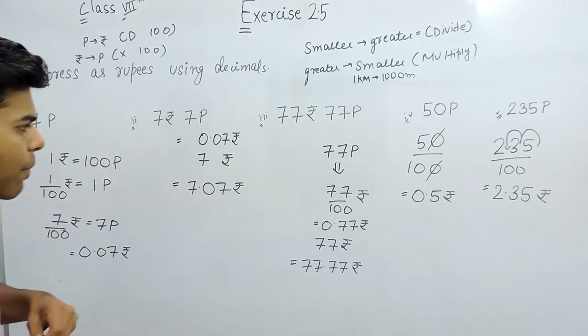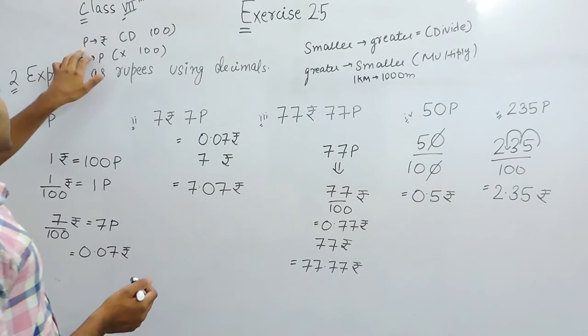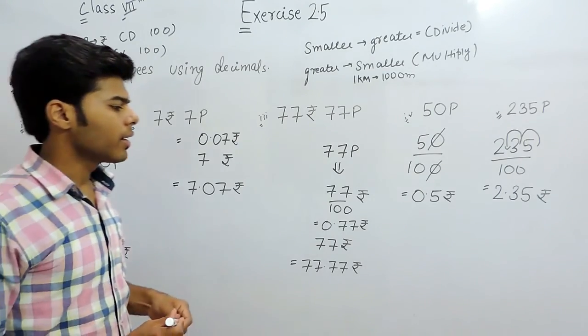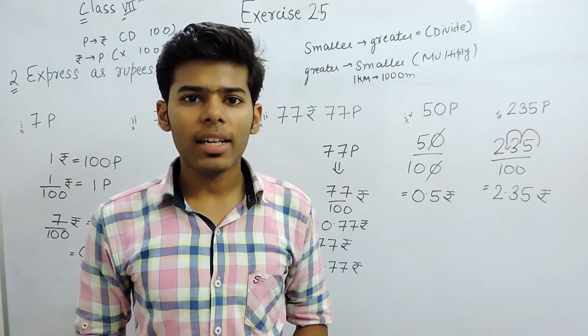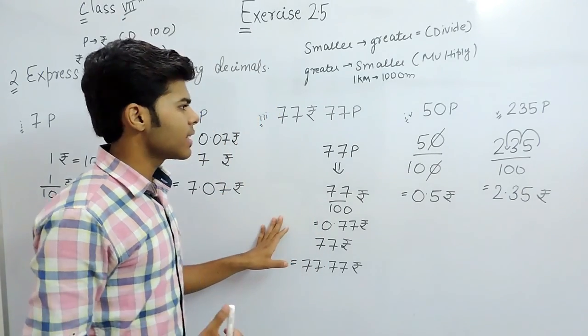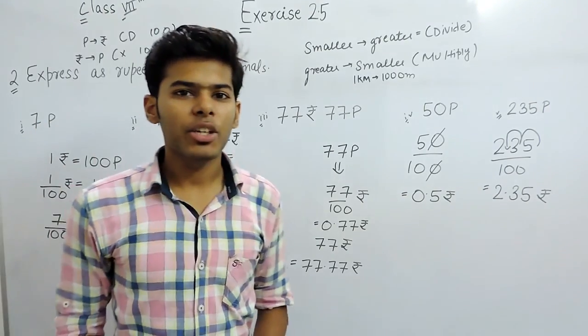This is how you can solve these types of questions by using this simplest technique. When paisa is to be converted in rupees, we will divide by 100. And when rupees is to be converted in paisa, we will multiply with 100. For any queries or doubts, you can kindly contact us on our YouTube channel, True Maths. And you can follow us there. This is how you can solve this type of question. Thank you. Bye-bye.